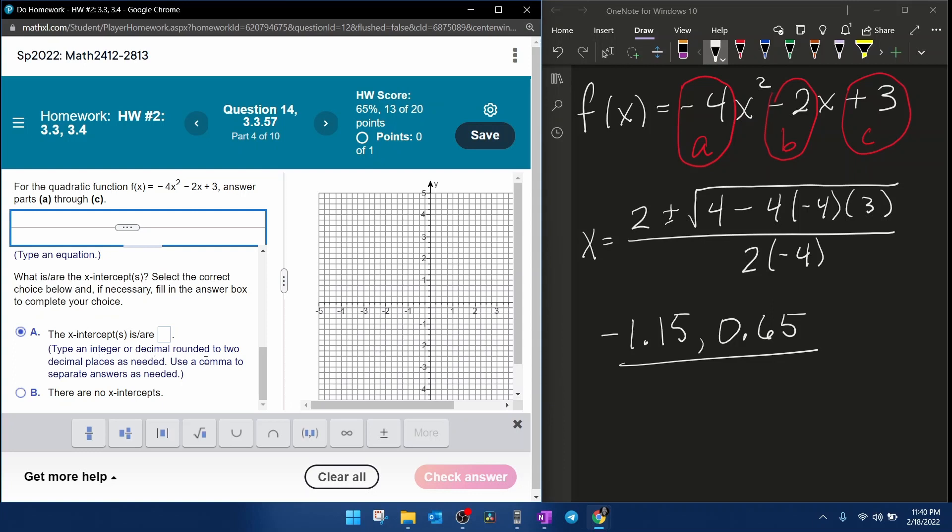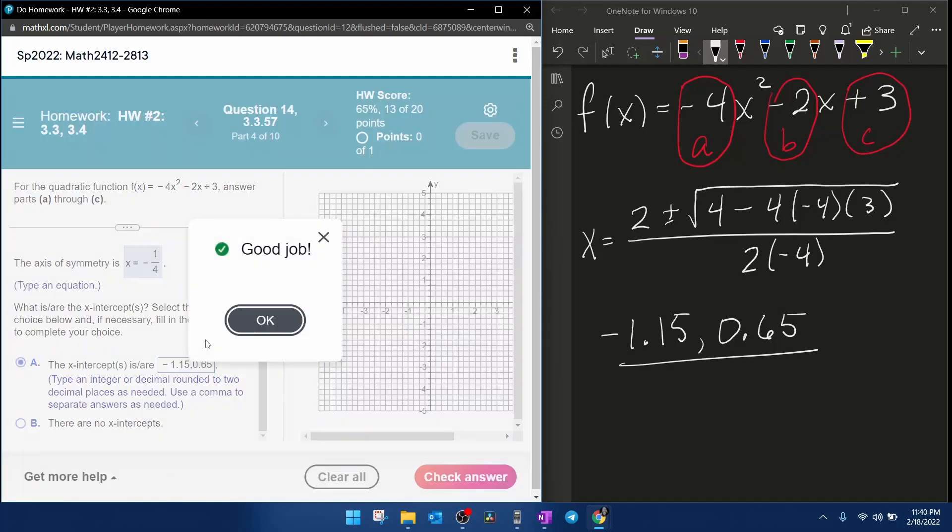Type an integer or decimal. I'm just making sure they don't want those as ordered pairs. It doesn't say as an ordered pair. So they just want the x-coordinates. Please make sure that you use the decimal and the comma appropriately. If you use a decimal instead of a comma or vice versa, it will screw that up.